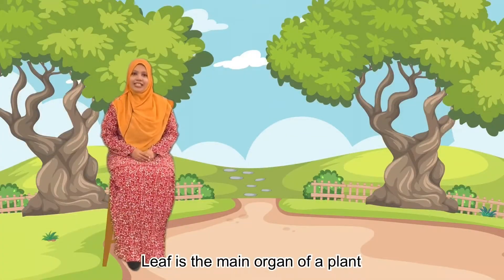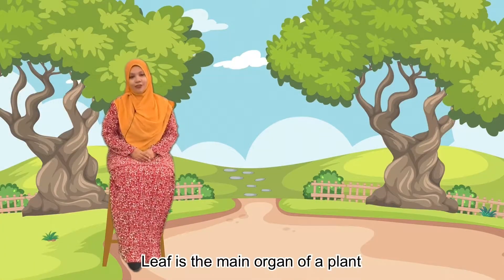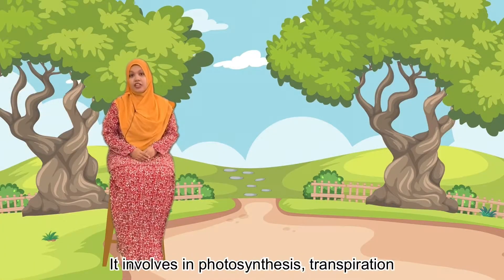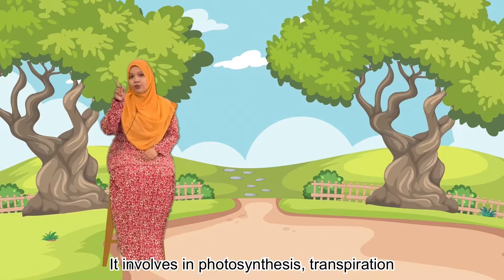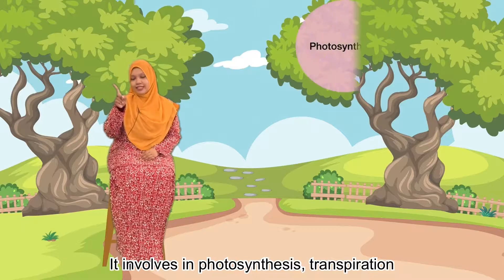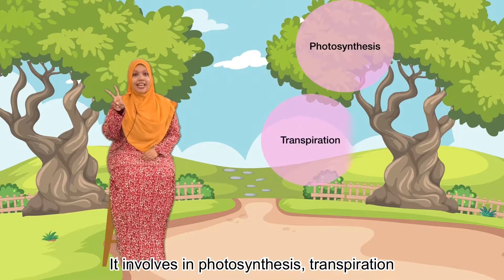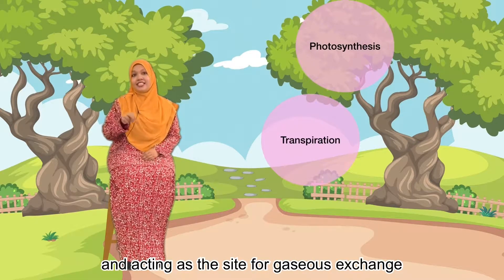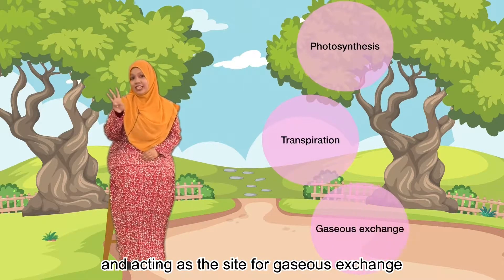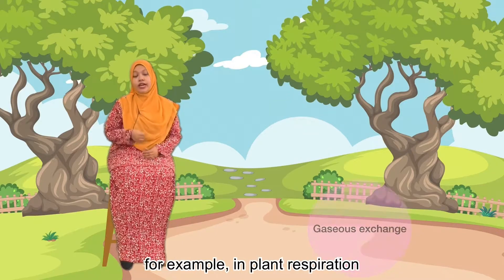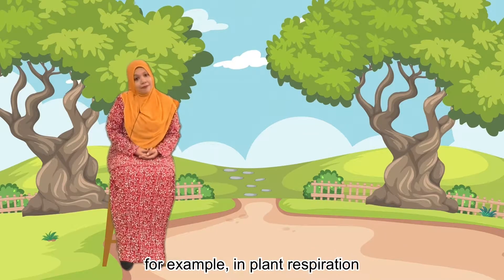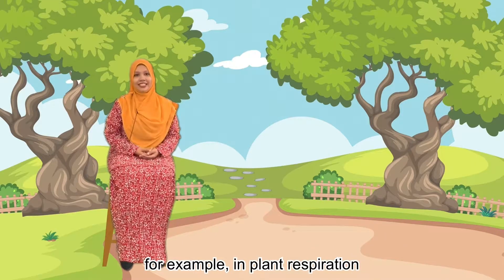The leaf is the main organ of a plant. It is involved in photosynthesis, transpiration, and acting as a site for gases exchange, for example in plant respiration.